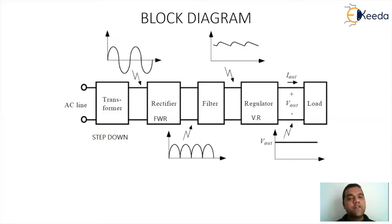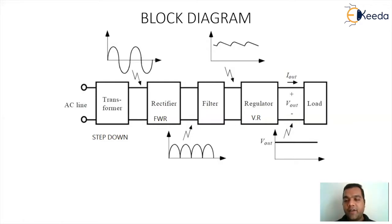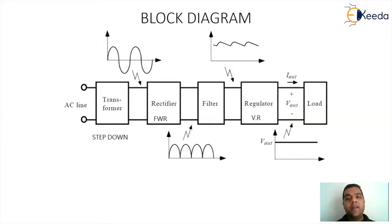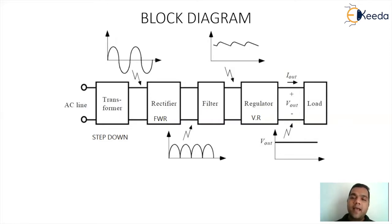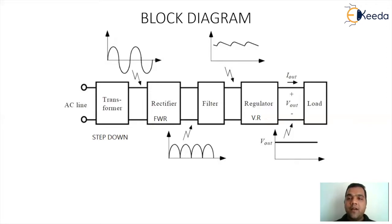The first unit is a step-down transformer. The output of the transformer is given to a rectifier — normally a full wave rectifier or a bridge rectifier — so that cycles are obtained in the form of positive cycles only. They are then given to a filter section. The filter eliminates ripples and the AC component to produce a DC at the output. Now this DC can be given directly to the load, but there is no guarantee it will be stable. So between the filter and the load, we place a voltage regulator.